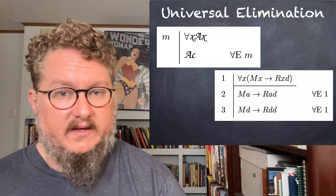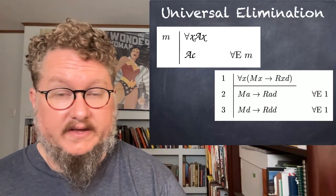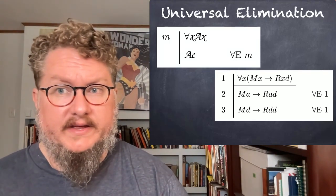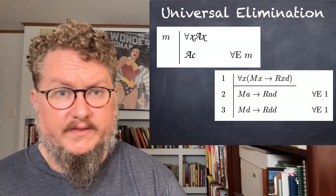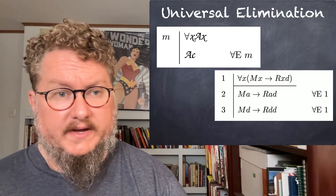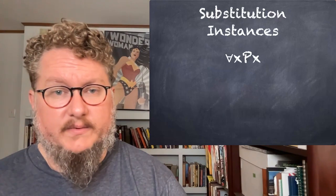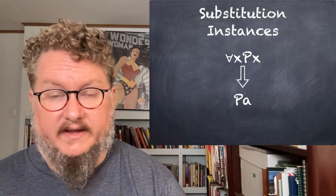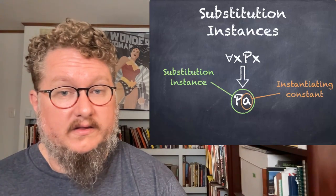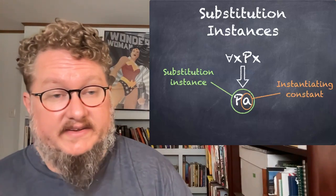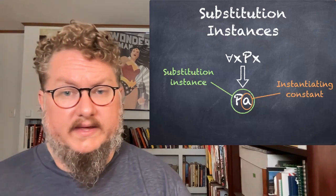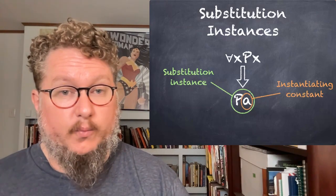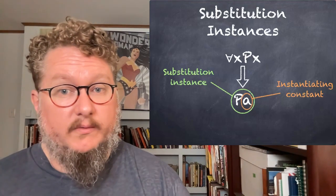And if you think about it, this makes sense because if it's true for all X, then it's going to be true for any object represented by one of our constants. I want to say something about this notation we use for the universal elimination rule. It allows us to create what we call a substitution instance. When we have a universal quantifier case like for all X and we replace the variable with a constant, we call the constant we use the instantiating constant. The universal elimination rule just allows us to replace a universal statement with one of its substitution instances.